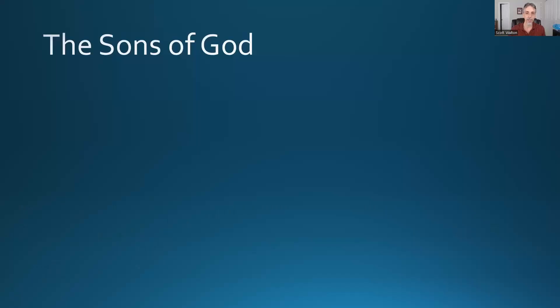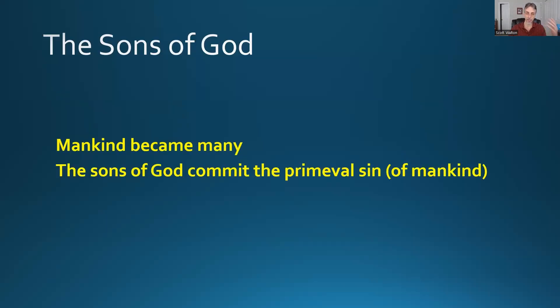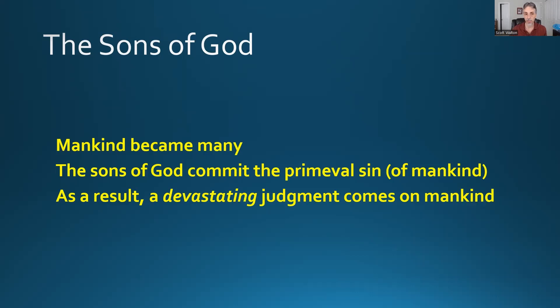Putting together everything we've looked at for Genesis chapter 6, we see: mankind became many, the sons of God committed the primeval sin — which is a sin of mankind — and as a result a devastating judgment comes on mankind. The scope of the passage is all about mankind. And that tells us that the sons of God are mankind — they are people, not angels or anything else as some people will say.